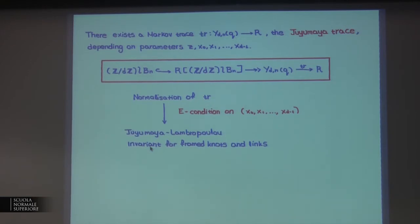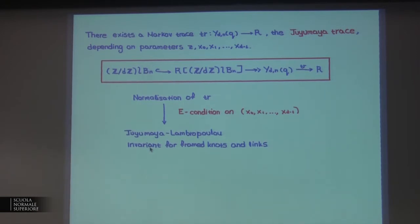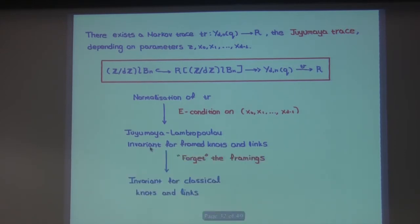A framed knot is just a classical knot with weights attached. So if we take all weights equal to zero, or forget the weights, we get back a classical knot or link. Since BN is inside the wreath product, if we forget the framings we obtain an invariant for classical knots and links.